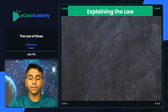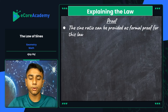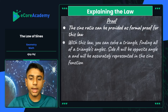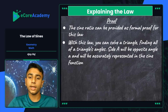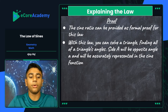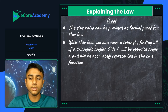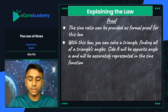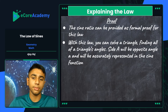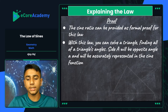Let's look at the proof explaining the given Law of Sines. The sine ratio can be provided as formal proof for this law, and with this law you can solve a triangle by finding all of its angles. The sine ratio is what backs this up — it already represents and proves the correspondence of sides, which develops the entire Law of Sines. Side a is opposite angle A and accurately represented in the sine function, as are angle B with side b and angle C with side c.